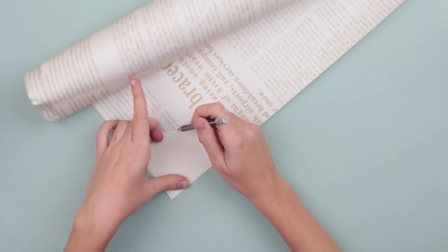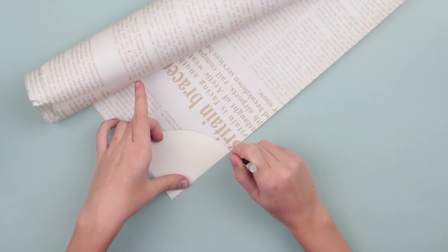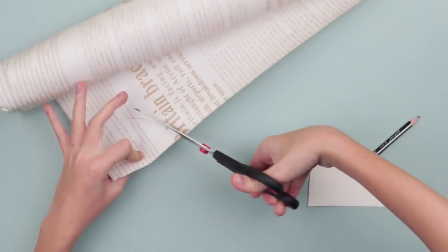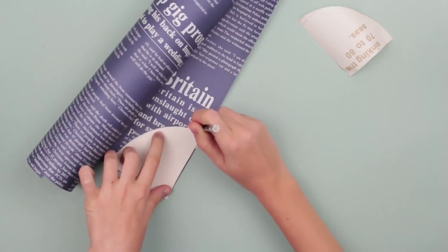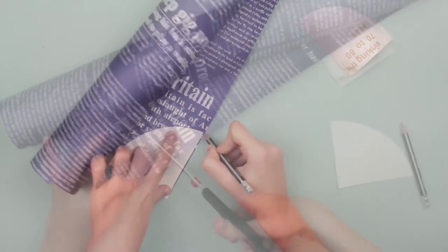Place the pattern onto the wrapping paper and trace. Cut it out. Place the detail to see how it fits. Cut out a couple of other embellishments. You can use different paper.